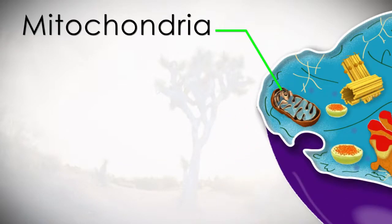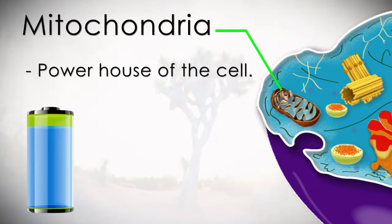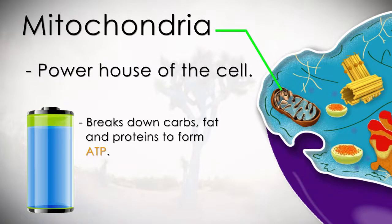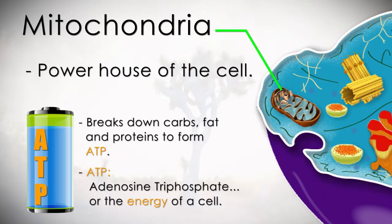Mitochondria. The mitochondria is the powerhouse of the cell. What it does is breaks down carbs, fat, and proteins to form ATP, otherwise known as adenosine triphosphate, or the energy of the cell.